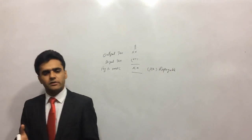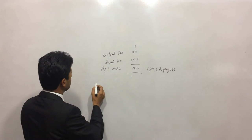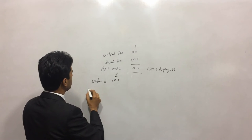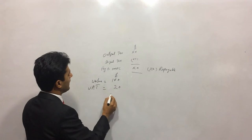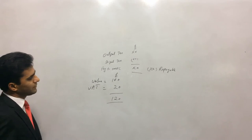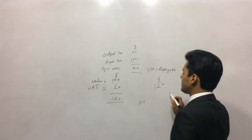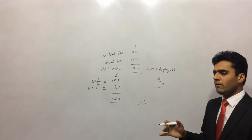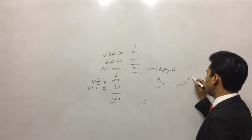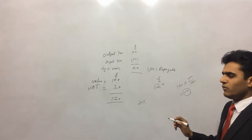Now for VAT calculations — this was covered at F3 level. If the value of an asset is £100 and the VAT rate is 20%, the total amount is £120. If someone gives you the total value of £120 and the VAT rate is 20%, you calculate the amount excluding VAT by doing 120 × 100/120. To find the VAT amount from an inclusive price of £120 at 20%, you do 120 × 20/120, which gives £20.